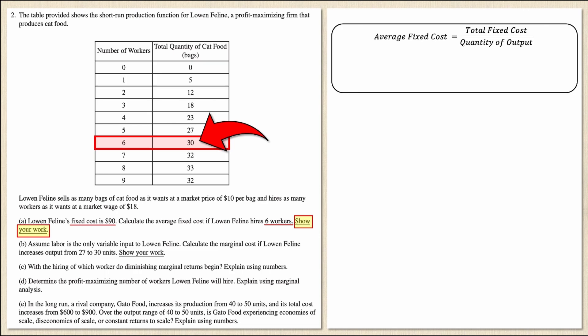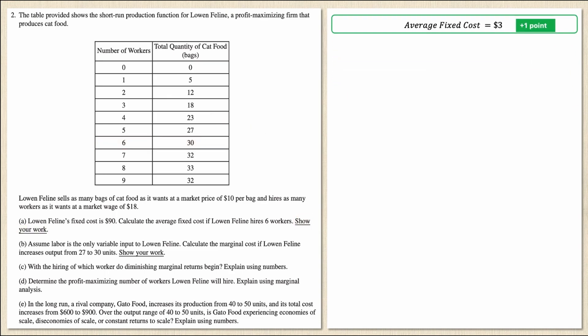Substituting in the fixed cost and quantity of output: average fixed cost equals $90 divided by 30, which simplifies to $3. That right there is a point. The hardest part is remembering that equation and inferring that output is 30 units when you have six workers. If you showed your work like this then you have your first point. Let's move on to Part B.